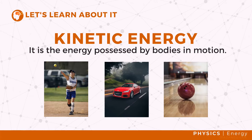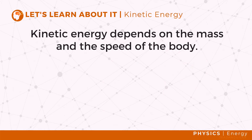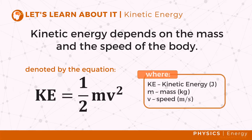Kinetic energy depends on an object's mass and speed. It is denoted by the equation KE equals mv squared, where KE is the kinetic energy in joules, m is the mass of the object in kilograms, and v is the speed of the object. The greater the mass of the moving object, the greater the kinetic energy. Also, kinetic energy is directly proportional to the square of its speed.